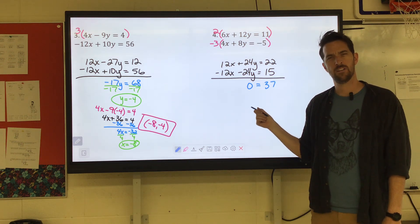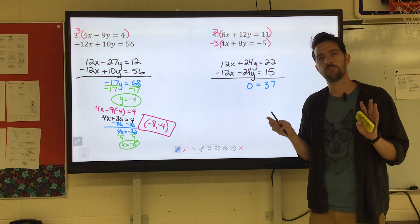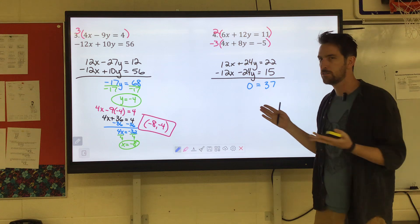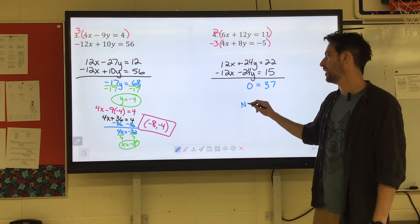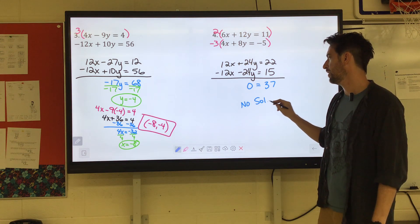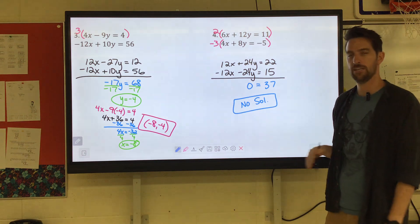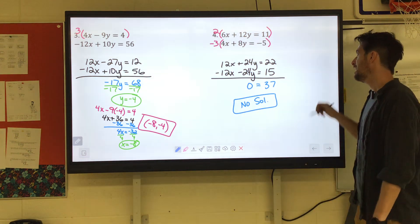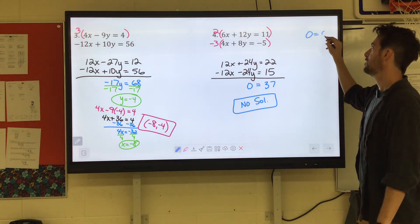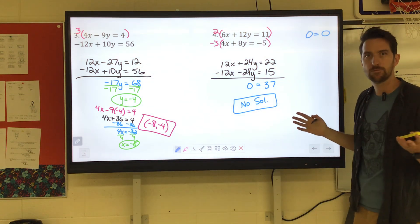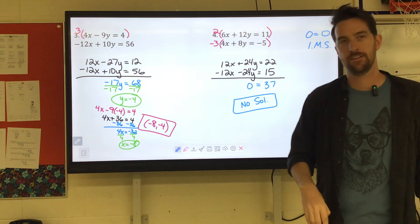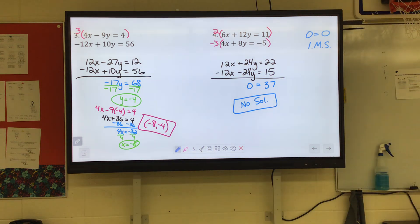So thinking of our special cases, no solution or infinitely many solutions, 0 does not equal 37. So that would be the no solution. If all your variables cancel out and you're left with something not true, no solution. If it comes out to 0 equals 0 or 8 equals 8, that would be your infinitely many solutions, if that does happen. And it happens from time to time.